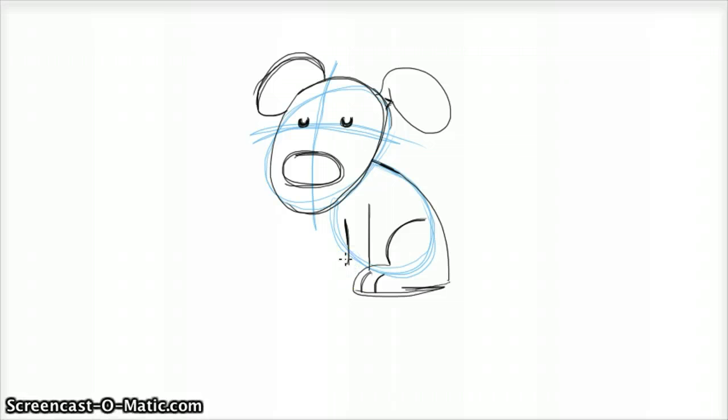But at the same time not too skinny either. And come in here and just draw the paw. This paw actually hides behind this back leg, this back paw. And we're going to go ahead and draw those lines to indicate toes.